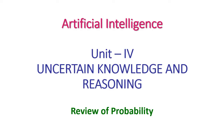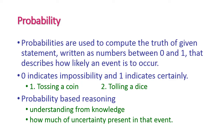The degree of belief lies between 0 and 1 for all sentences — that is the identification of truth of a sentence. Probabilities are used to compute the truth of a given statement, and probability values are written as numbers between 0 and 1, which describes how likely an event is to occur. Zero indicates impossibility and one indicates certainty. We learn probability theory using two popular examples: tossing a coin and rolling a dice.